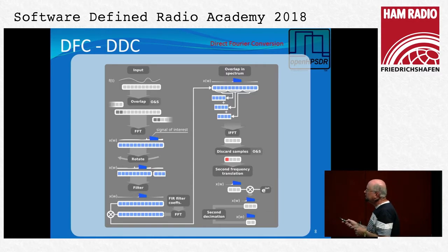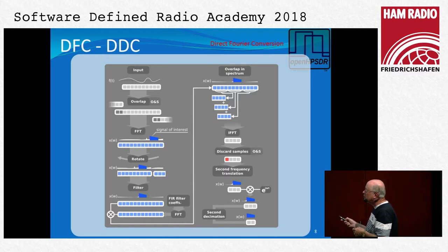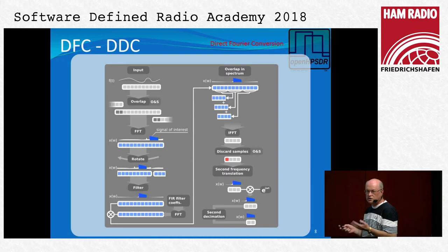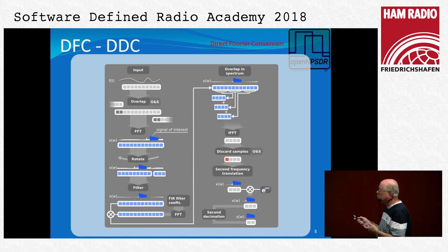Out of the FFT we have a number of bins, and somewhere in those FFT bins will be the signal of interest. We translate that into the center of the FFT — around zero hertz — so we can filter it, and it's a very simple process: we simply rotate the bins. Shifting FFT bins in the frequency domain is equivalent to doing a frequency translation in the time domain. In the time domain you'd use a mixer with a local oscillator; in the frequency domain, frequency translation is just a rotation of the bins.